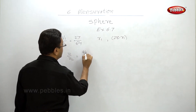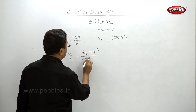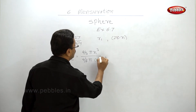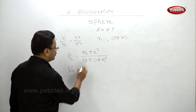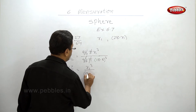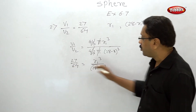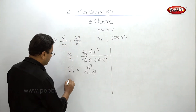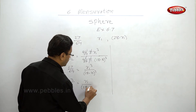The 4/3 and π cancel from both sides, leaving r1³ / (28 - r1)³ = 27/64. Taking the cube root of both sides, we get r1 / (28 - r1) = 3/4.